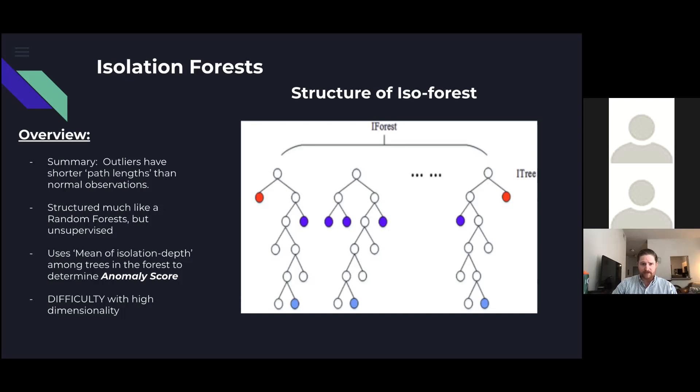An isolation forest uses a structure very similar to the random forest, but conceptually very different. Like a random forest, it is comprised of a designated amount of decision trees that split the data while looking for points to become isolated.